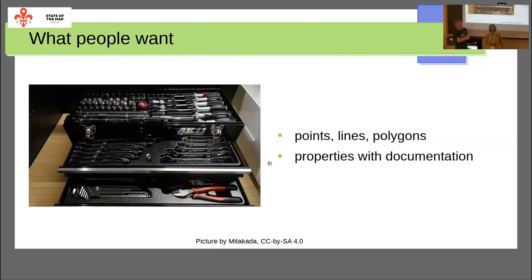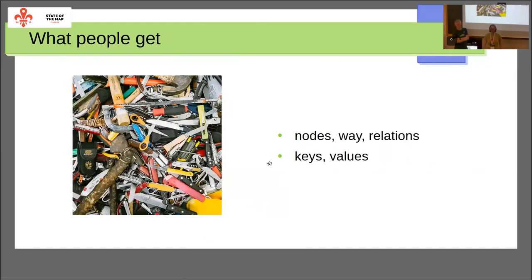Data users coming from the GIS world expect very neat data — they want points, lines, polygons, and a defined set of attributes, not a mess. What you get in OSM is nodes, ways, and relations. I have plenty of people who come to Pyosmium, a Python tool for working with OSM data, asking 'where are the lines?' And with keys and values not being defined, people don't know what to do with them. We've had questions where people say 'I've extracted all the addresses from Italy but they're wrong and incomplete,' and the answer is you have to first transform OSM with Nominatim into a huge database.